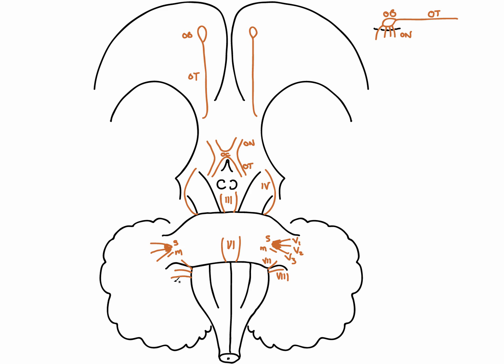Cranial nerve number nine is the glossopharyngeal nerve. It leaves the skull via the jugular foramen alongside cranial nerves ten and eleven and the internal jugular vein. It provides taste to parts of the tongue and sensation of the pharynx. Coming away from the lateral aspect of the medulla as a series of rootlets are cranial nerves ten and eleven — the vagus nerve and the accessory nerve. The vagus serves thoracic and abdominal viscera, while the accessory nerve is a motor nerve supplying trapezius and sternocleidomastoid. Cranial nerves nine, ten, and eleven all pass through the jugular foramen.